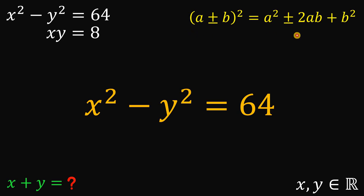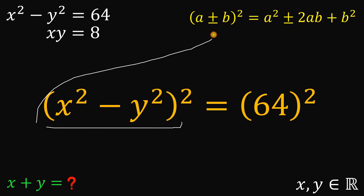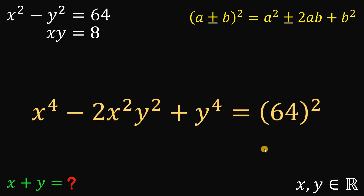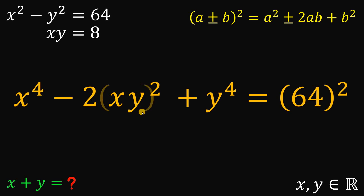What we're going to do is square both sides. So x squared minus y squared raised to the power of 2, using this identity, is equivalent to x raised to the power of 4 minus 2 times x squared y squared plus y raised to the power of 4, equals 64 raised to the power of 2. Now let's focus on this result. Note that x squared times y squared can be rewritten as xy raised to the power of 2.